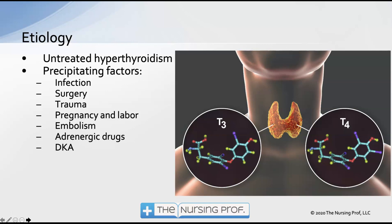In patients who have thyroid storm, we have the overproduction of these hormones. Typically, this is in someone who has untreated hyperthyroidism — either they don't know they have it, or they know but aren't treating it, perhaps because they ran out of medications. We also have precipitating factors that can trigger thyroid storm, such as infection, surgery, trauma, pregnancy, embolism, adrenergic drugs, and DKA. So our hospitalized patients are at high risk for developing thyroid storm if they have underlying untreated hyperthyroidism.